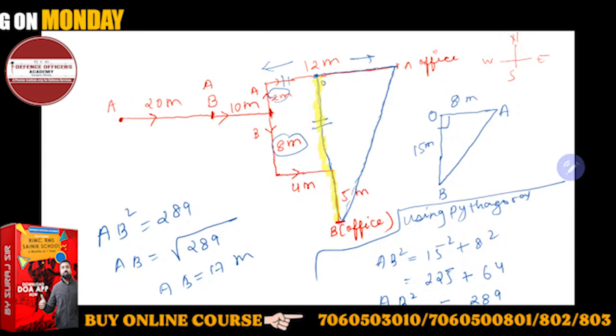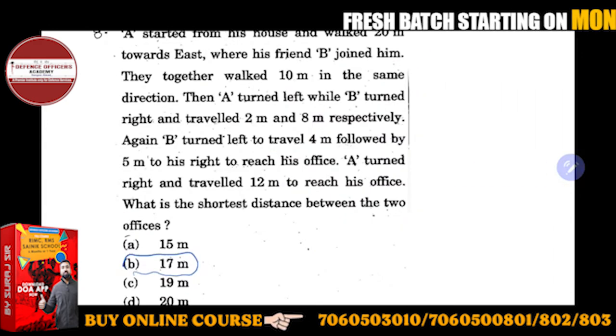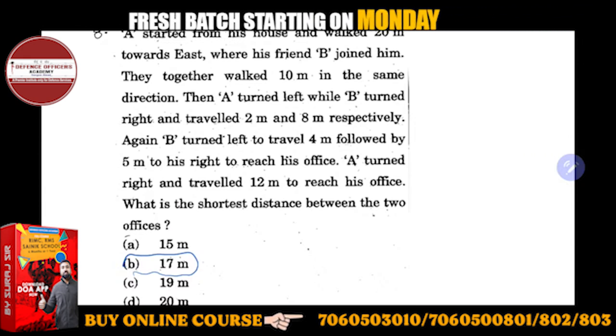AB is 17 meters. So option 17 is given to you. 17 meters will be the right answer, the distance. So what you have done? You have applied Pythagorean theorem at the end.